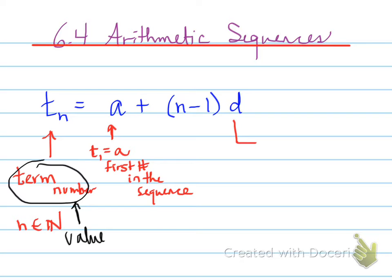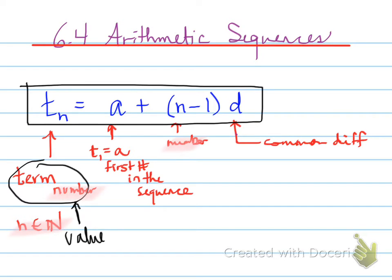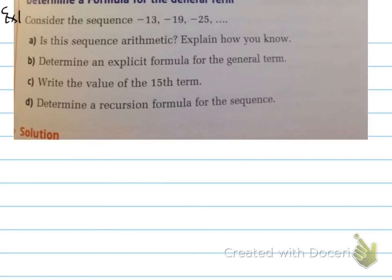A is known as T1 — that is the first term in the sequence, the first number in the sequence. D is known as the common difference; that's what makes an arithmetic sequence. N represents the term number — the position we're finding. TN stands for the value we need to replace. Sometimes we're looking for the value at a term number, and sometimes we're finding another part of this equation. You are strongly urged to memorize this formula.